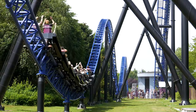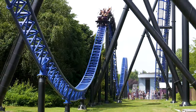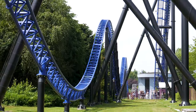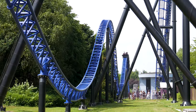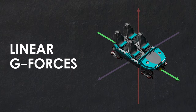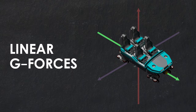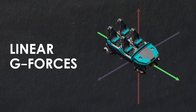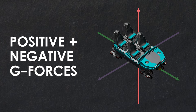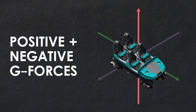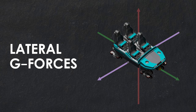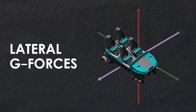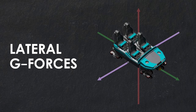During most roller coaster rides, guests will experience a range of g-force types, each of which act in different directions. Linear g-forces occur in the forwards and backwards direction. Positive and negative g-forces occur in the upwards and downwards directions respectively, while lateral g-forces occur from side to side, in the left and right directions.